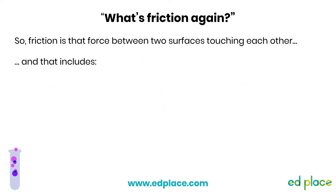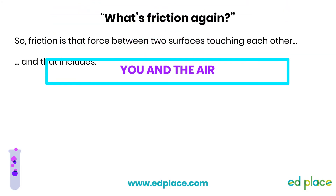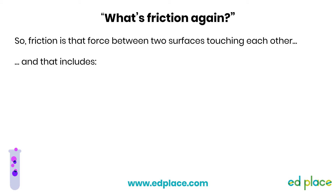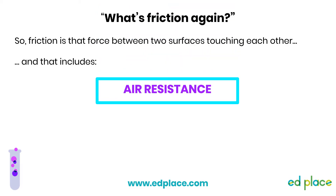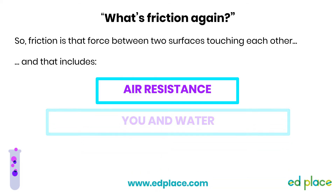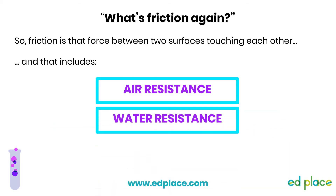So now we come to something new: friction in air and water. Remember, even the air is touching you, and if you were a pigeon, you'd be using friction between your wings and the air to hold you up and fly around. Now, friction between you and the air - say, when you're riding your bike and you can feel the wind in your face - that's called air resistance. Then, if you're swimming, you're pushing against the water in order to move. That's called water resistance.